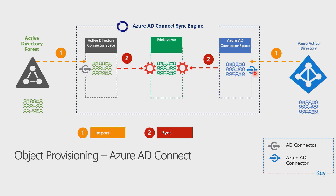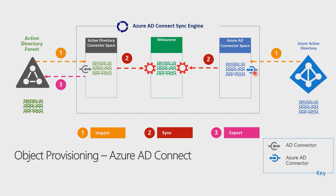And finally, we have the export stage, updating the connected systems per the metaverse. This is where the objects in Azure AD and AD on-premises are updated. For example, if an Office 365 group was created in the cloud, then we will write that group back to Active Directory as a distribution group. If there is a new account of a new employee on Active Directory, then the Azure AD connector will create the user object in the cloud.